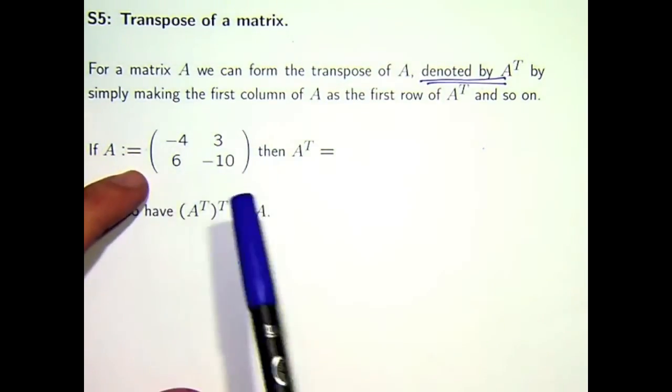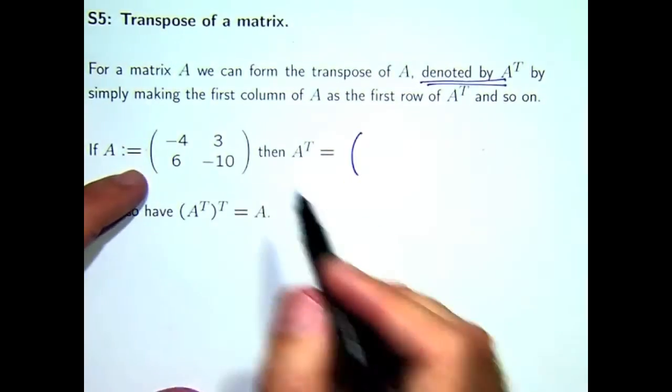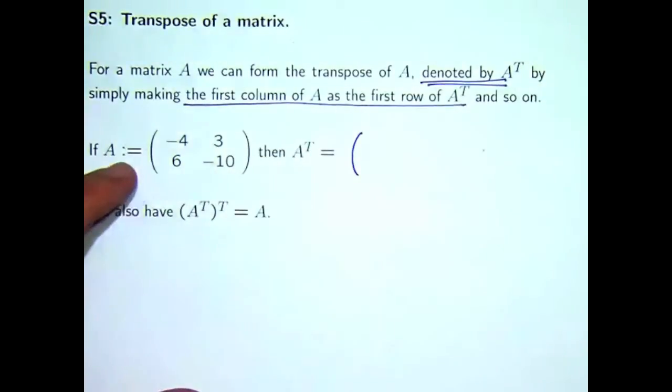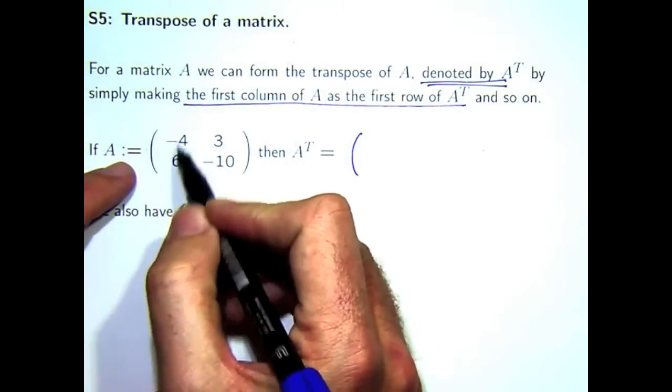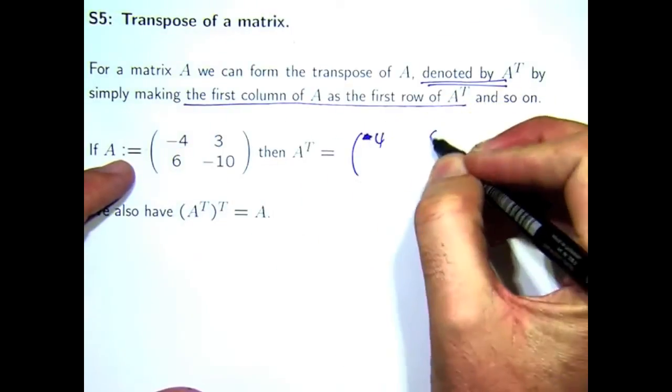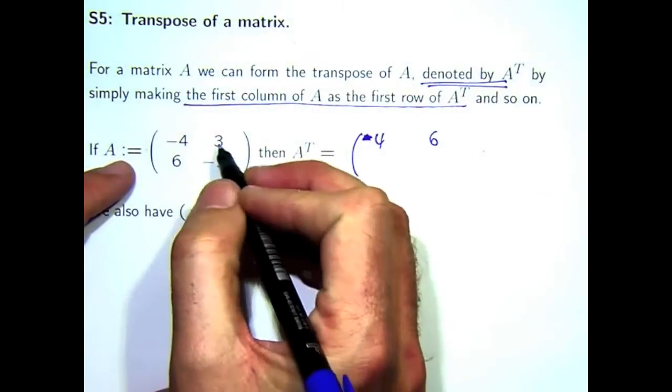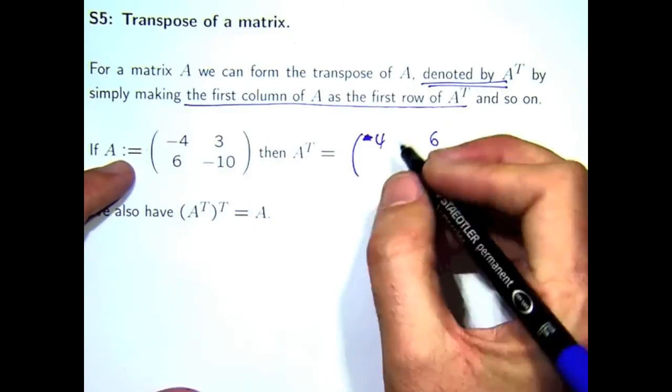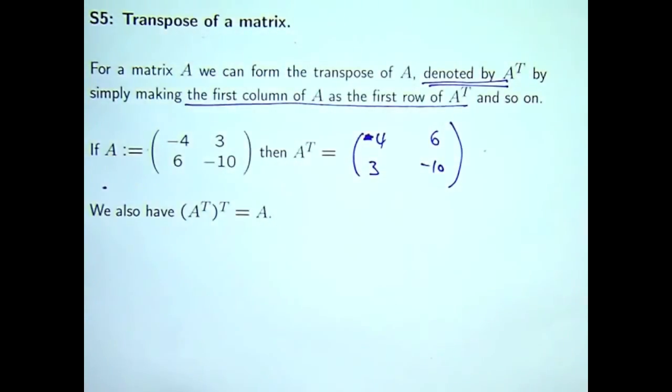Here's a 2 by 2 matrix. Basically, you take the first column, minus 4, 6, and you write it as the first row. Take the second column, 3 minus 10, and write it as the second row. That's the transpose.